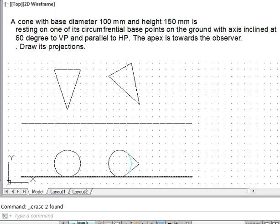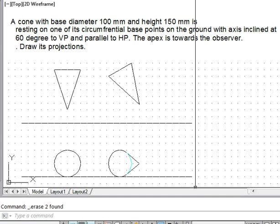And this line I don't need, and this one is also just a construction line, so let me remove them. So this is the complete picture of the cone in the final position. We complete the problem this way. Thank you.